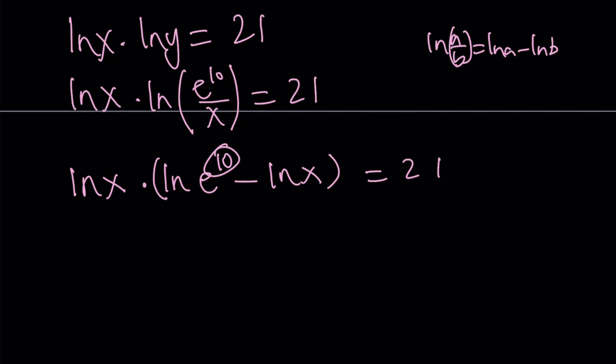Now notice that this 10 can be moved to the front. And it's just going to become 10 times ln e, which is 10 times 1, which is 10. So this is ln x times 10 minus ln x equals 21.